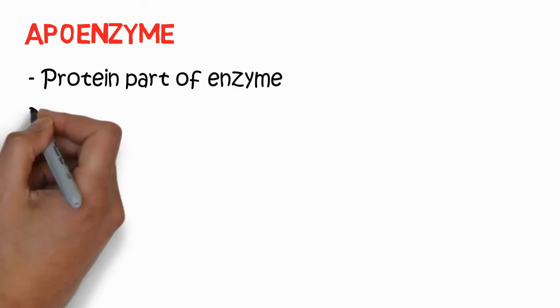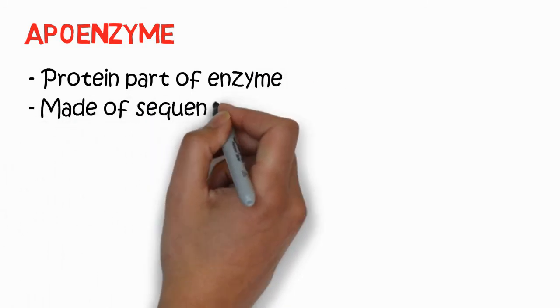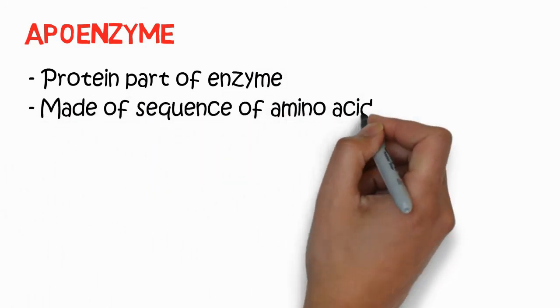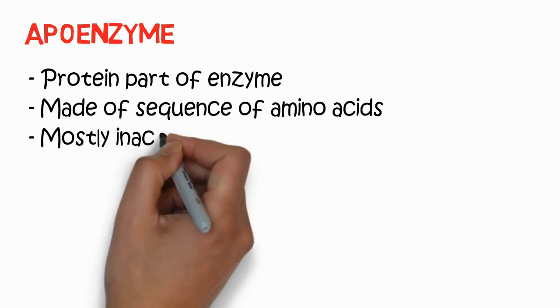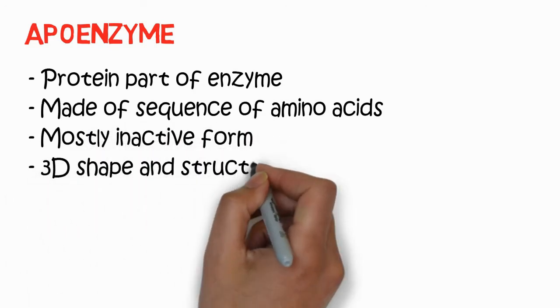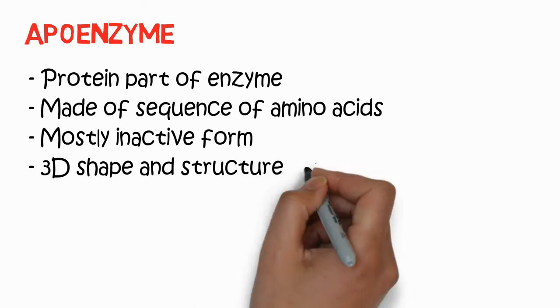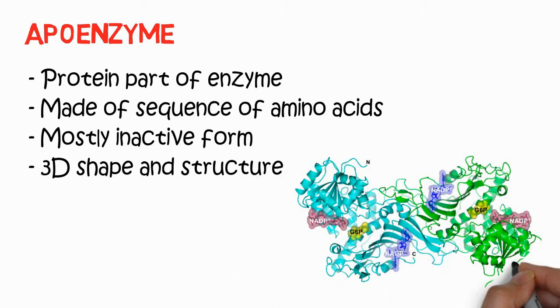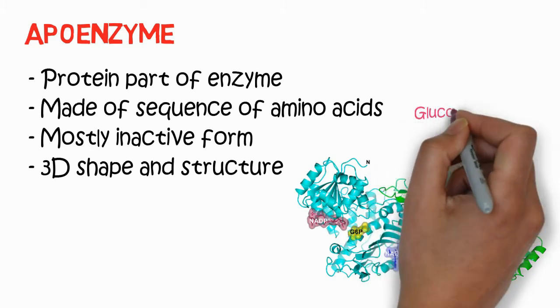The first part is known as apoenzyme. It is the protein part of the enzyme which is made of a sequence of amino acids. Mostly this is inactive, especially in conjugated proteins. It is in the 3D shape and structure. You can see here the structure of the enzyme.